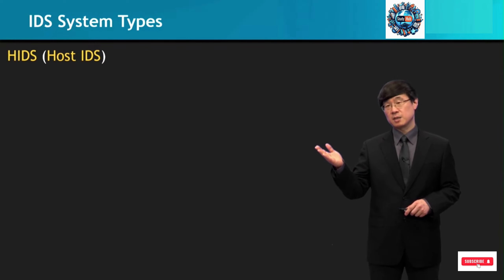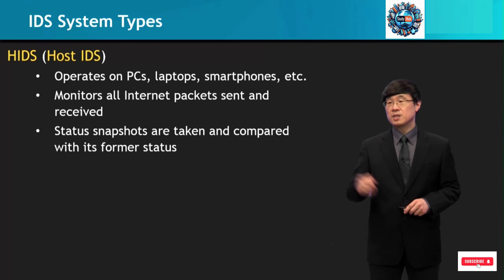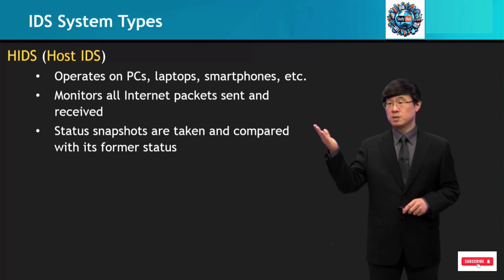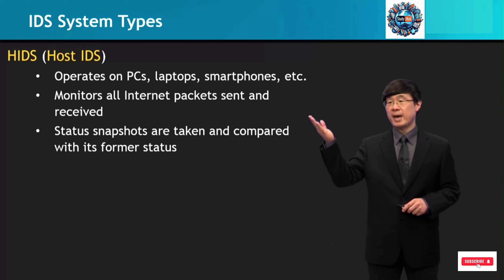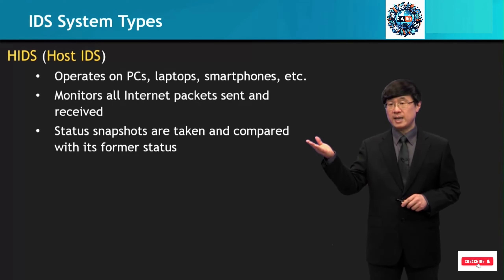The types of IDS systems are now introduced. First, host IDS, which is HIDS. This operates on host computers, laptops, smartphones, and tablet PCs, and it monitors all internet packets sent and received by that device. In addition, status snapshots are taken and compared with its former status.